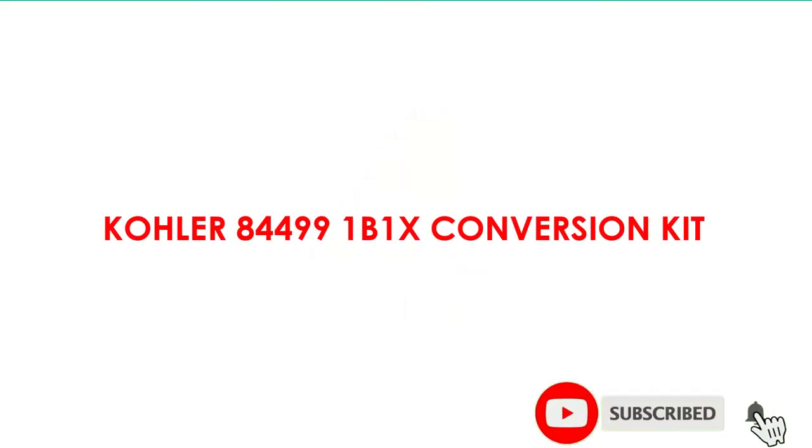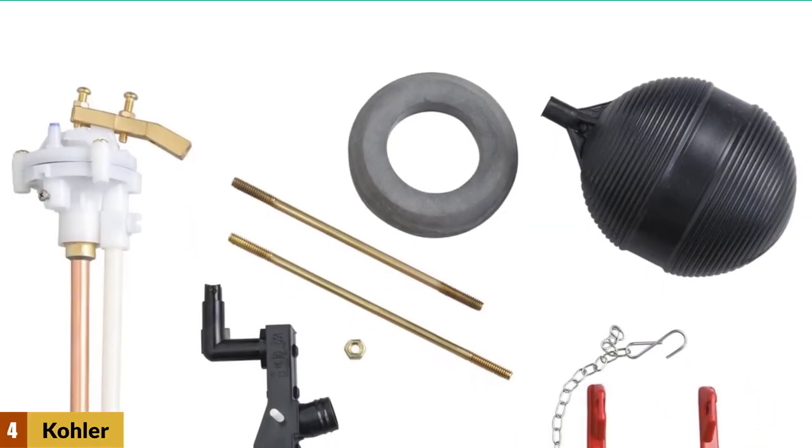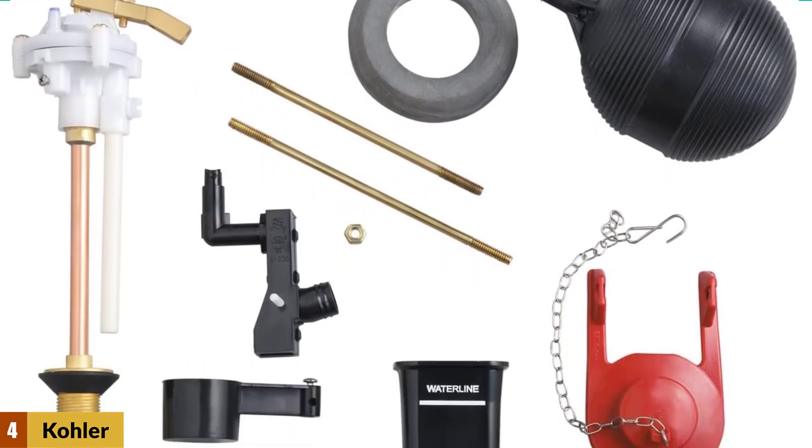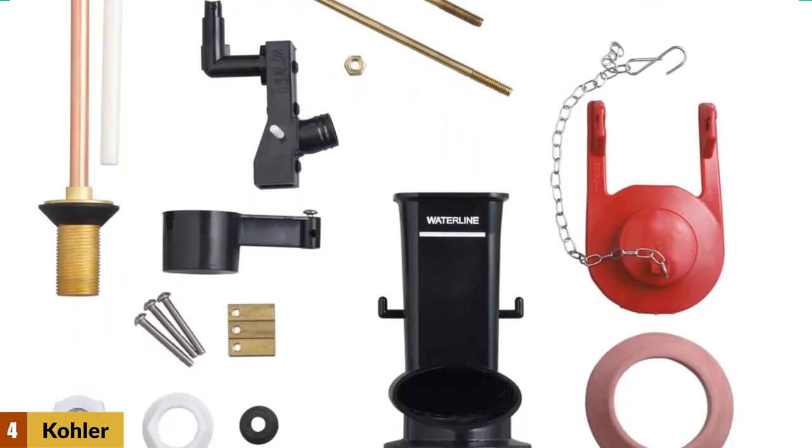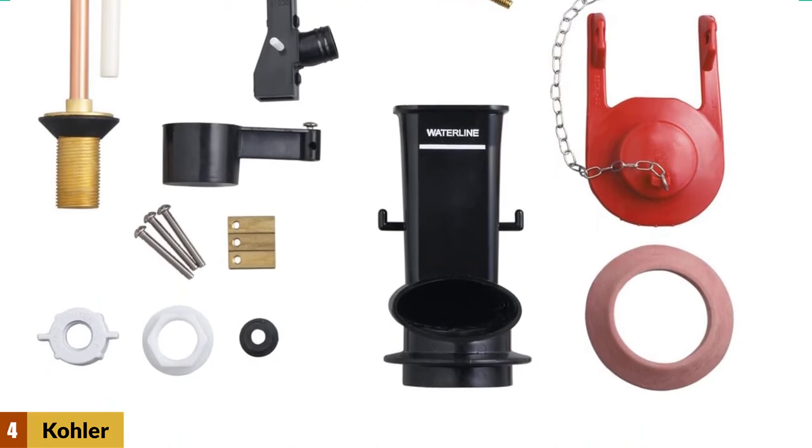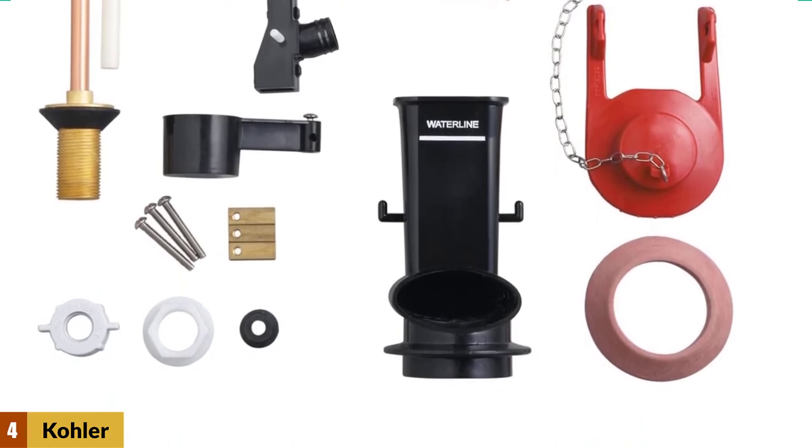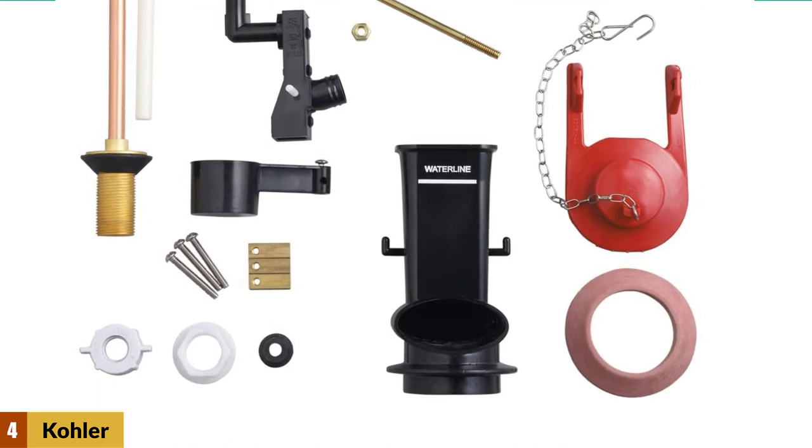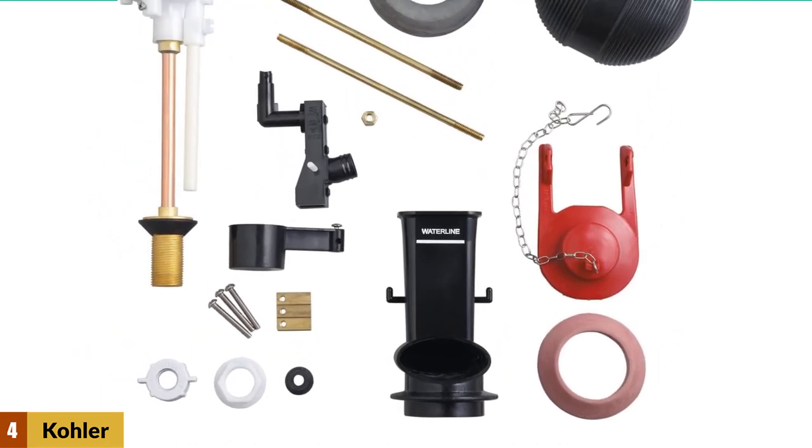At number four, Kohler 84-499-1B1X conversion kit. This kit includes the parts that you need to maintain the performance of your old Kohler toilet. It is more expensive than other universal kits, but it is the only one that contains genuine Kohler parts. If your old toilet has started to malfunction, then buying this kit will help you replace all the old worn parts.